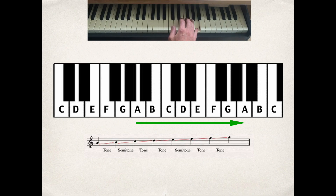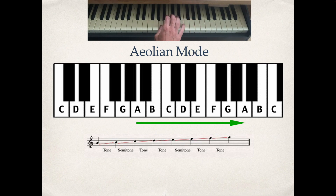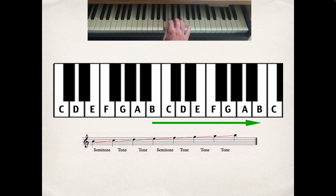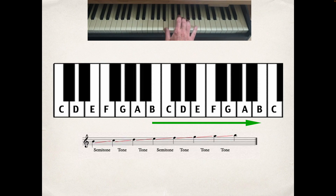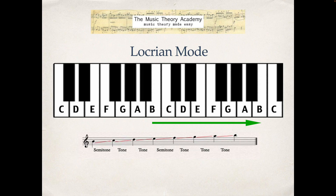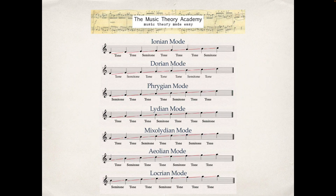Starting on A gives us another familiar pattern of notes — this is called the Aeolian mode, which we recognize as the natural minor scale, but it was originally the Aeolian mode. One more to go: starting on B gives us a really distinctive sound — this is the Locrian mode.